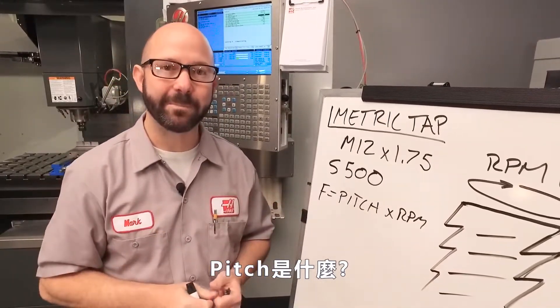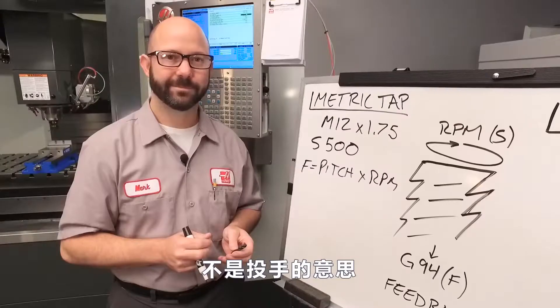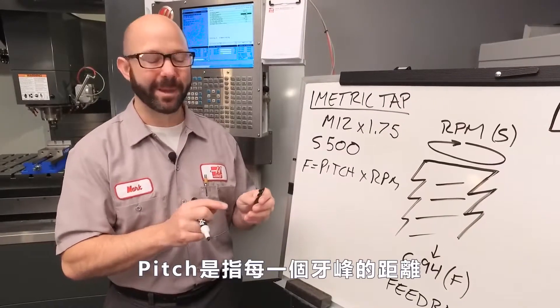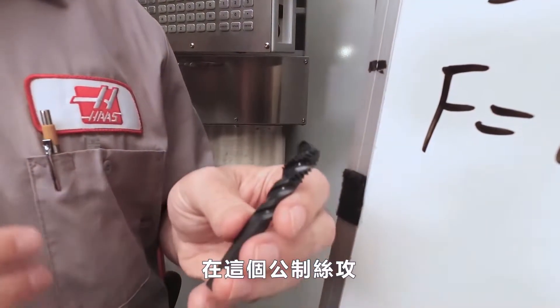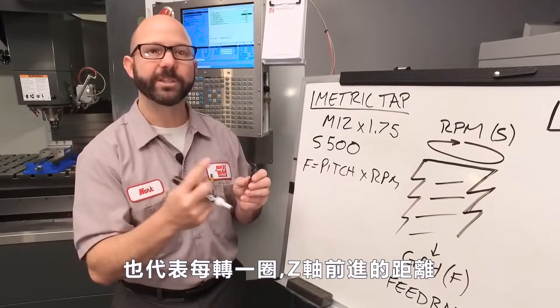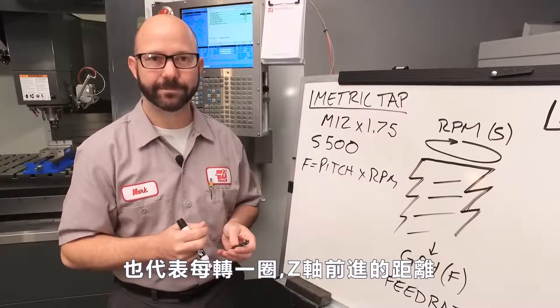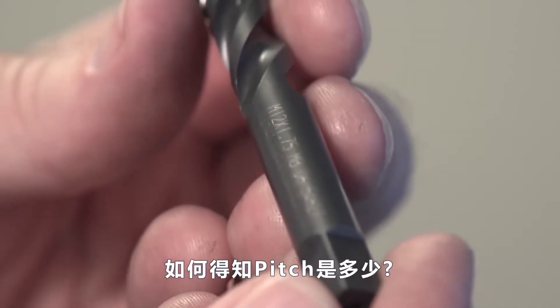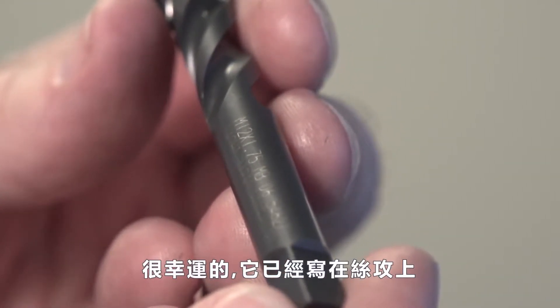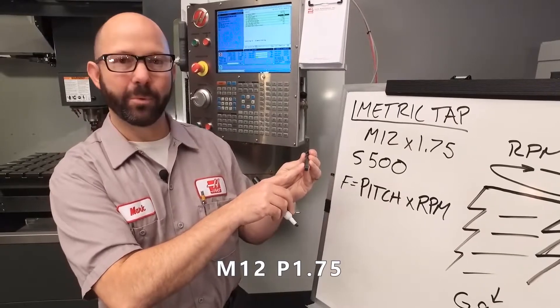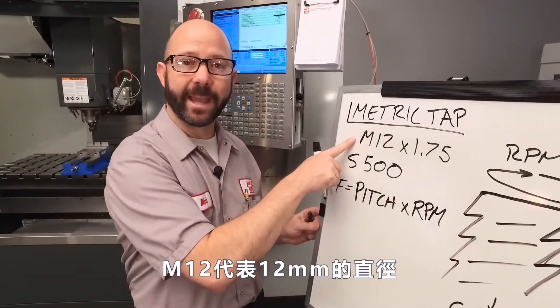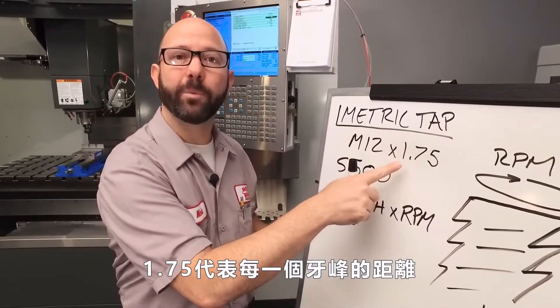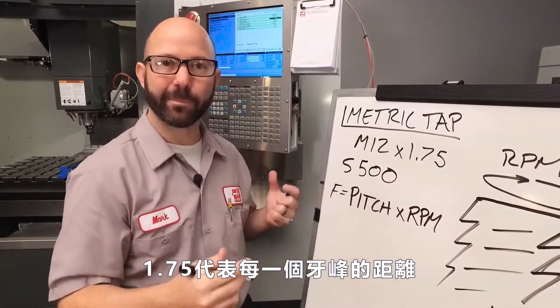Now pitch, what do we mean when we say pitch? Not that kind of pitch. We're talking about the distance from one thread to the next. This is also the distance our Z axis needs to travel with each full revolution, also known as our lead. Now where do we get our pitch from? Well lucky for me, it's actually written on my tap, M12 by 1.75. M12 is the basic diameter, and 1.75, 1.75 millimeters, is our pitch.